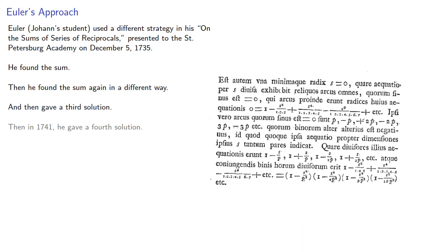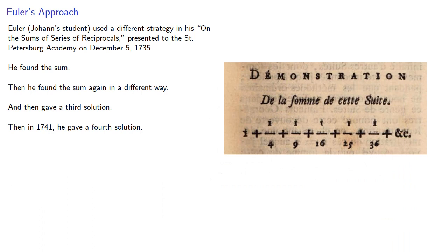Then in 1741, he gave a fourth solution. Did we mention Euler was the most prolific mathematician in history? If you really want to learn how to do mathematics, you could do far worse than to study the works of Euler intensively.